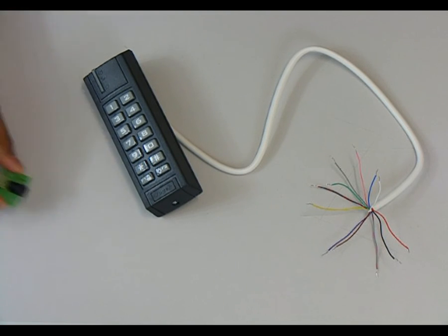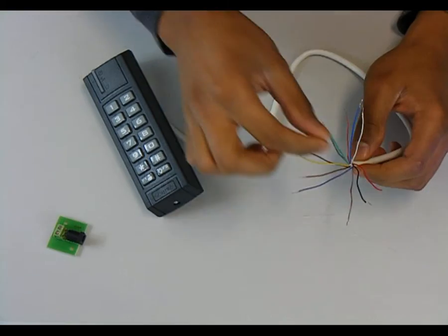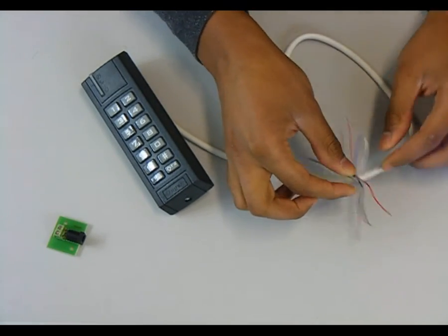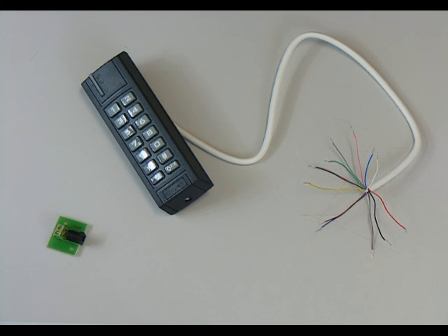To supply the reader we have used an adapter which has been connected with DC input. Red wire as a plus and black wire as a minus. Wires description can be found in the reader guide.